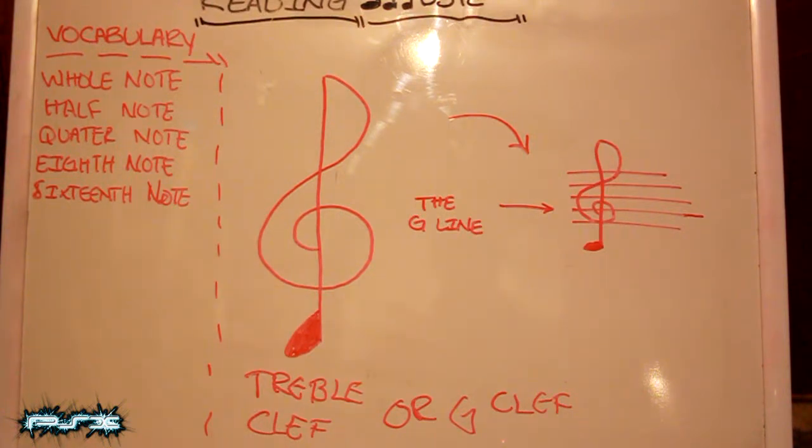But for alto, soprano, tenor, and I believe also baritone, they all play in the treble clef. So the range, we'll get to that later. But this is what the note is. It basically tells you what range you're going to be playing in.